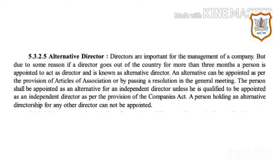Alternative Director: Directors are important for the management of a company, but if a director goes out of the country for more than three months, a person is appointed to act in their place and is known as an alternative director. An alternative director can be appointed as per the provisions of the articles of association or by passing a resolution in a general meeting. A person shall be appointed as an alternative for an independent director only if they are qualified to be appointed as an independent director under the Companies Act.